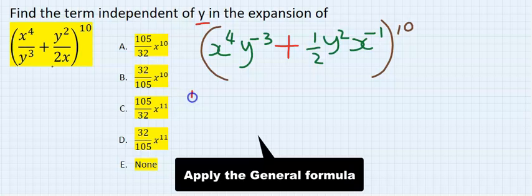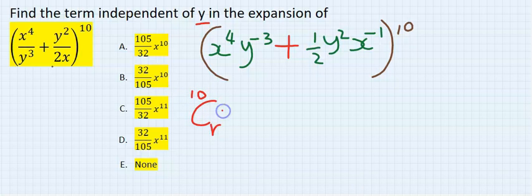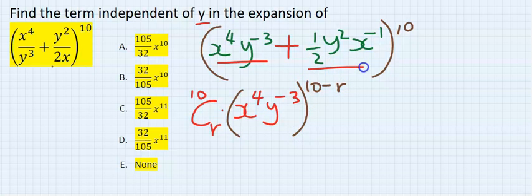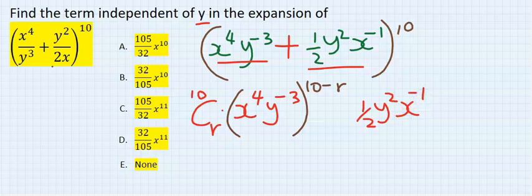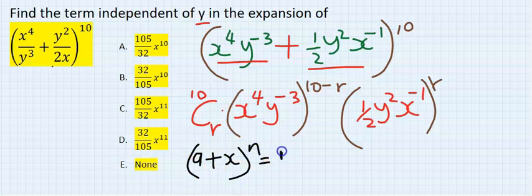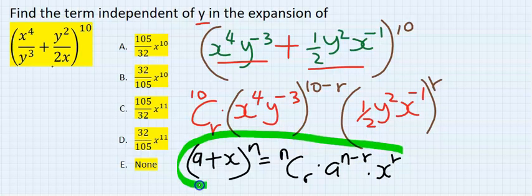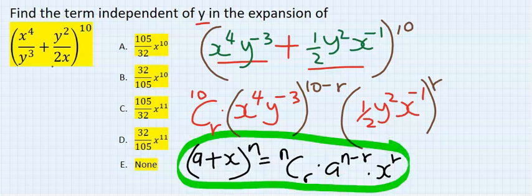The next step is 10 combination r. Everything on this side will be x to the power of 4, y to the power of minus 3, everything to the power of 10 minus r, and this will become half y squared x to the power of minus one, everything to the power of r. All we have been doing is applying the formula: (a + x)^n gives n combination r, a to the power of n minus r, x to the power of r. This is just the formula we have been applying in this expansion and you have to get familiar with it.